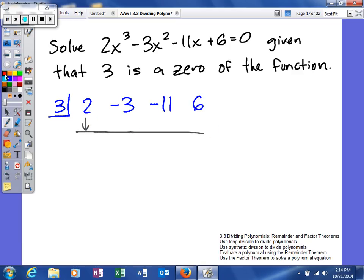So I'll bring the 2 down. So I'll say 2, multiply those two together, and I'll get 6. Add those together and we get 3. Multiply you get 9. Add you get negative 2. Multiply you get negative 6. And as you can see, they were right. 3 is a factor of that, because our remainder turned out to be 0 in this problem.